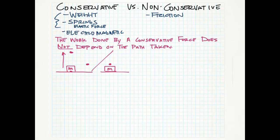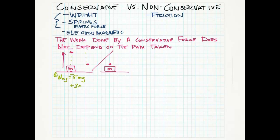In situation one, the work done by the weight — on this first trip we go five units, so negative five MG — and then on the way down we go three units, so positive three MG. So in this case, the work done by gravity for the entire trip is negative two MG.